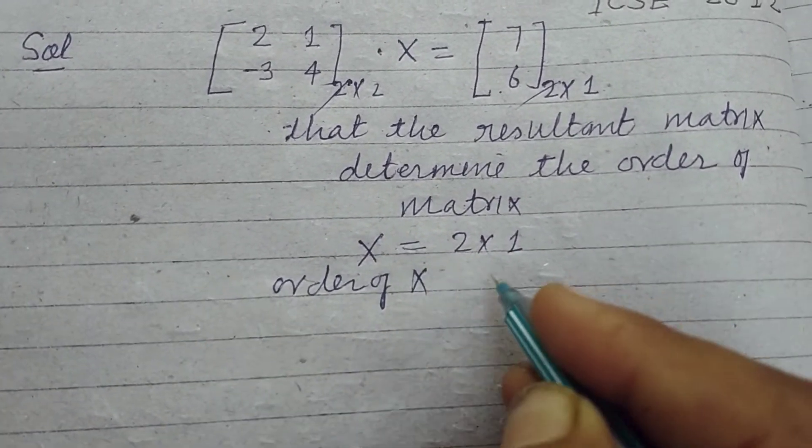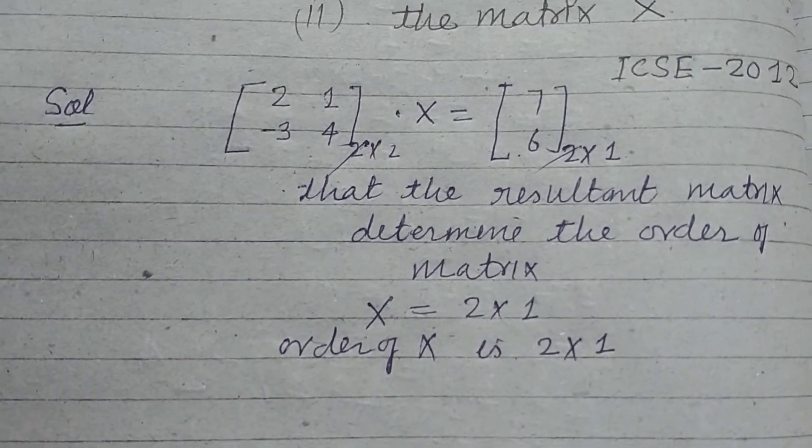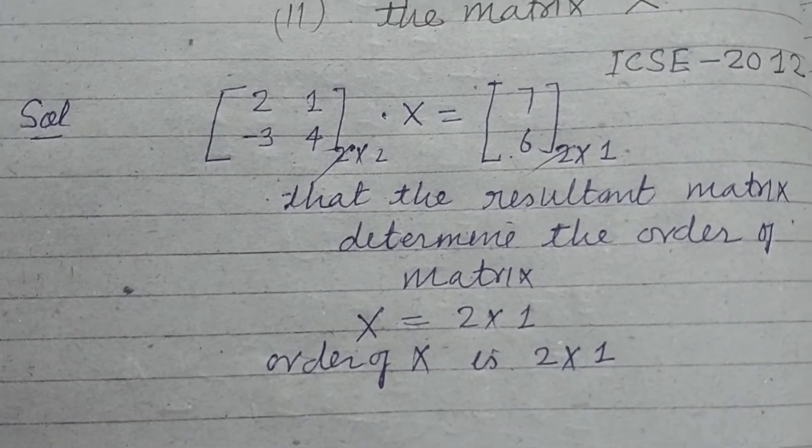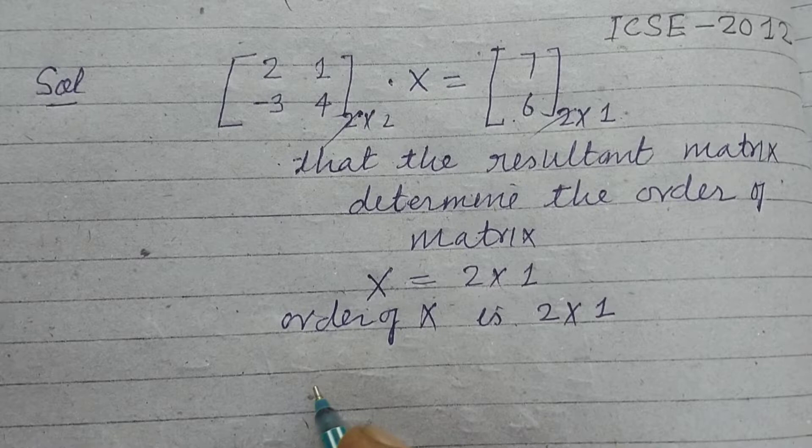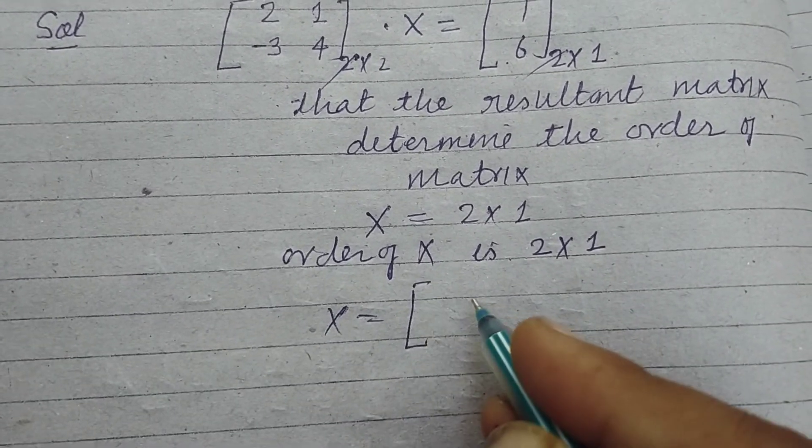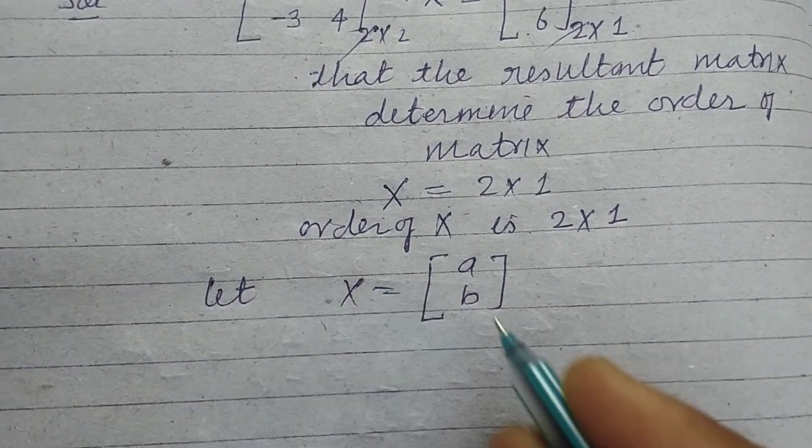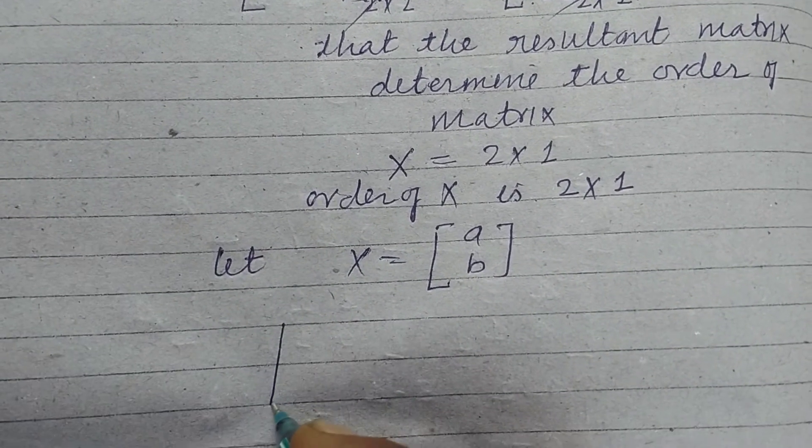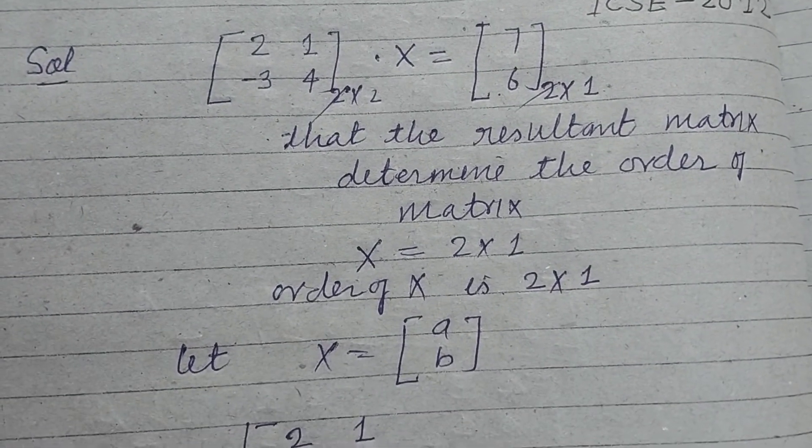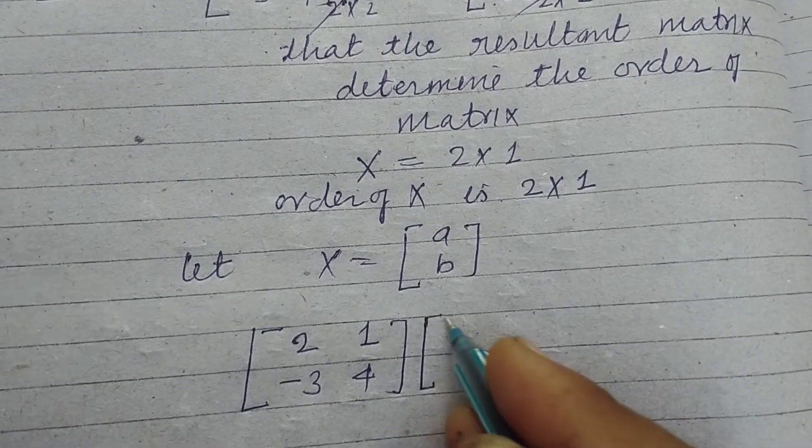Now find matrix X. So let X be [a; b]. Multiplying this: [2, 1; -3, 4] into [a; b] equals [7; 6].